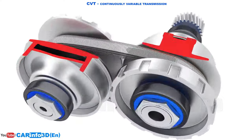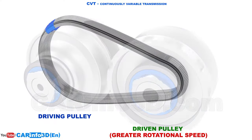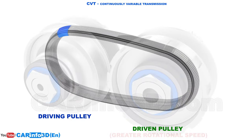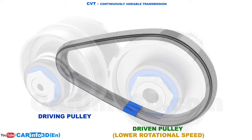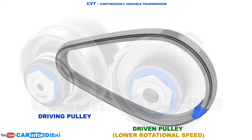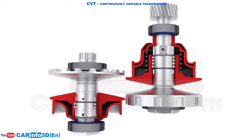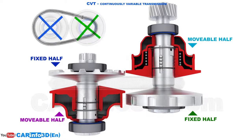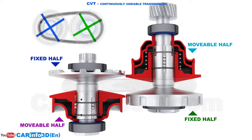Thus, the driven pulley is now rotating faster than the driving pulley. When the belt is reversed, the driven pulley rotates more slowly than the driving pulley. Proper functioning necessitates synchronized movements of the movable halves in order for the belt to stay consistently tensioned and not slip.